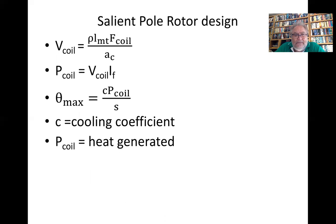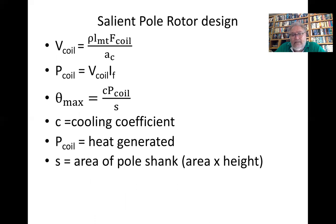And P_coil is the power generated. This is the area of the pole shank, which is the area times the height. The length of the gap can be calculated with this empirical formula: it is 0.2 plus 2√(τL).